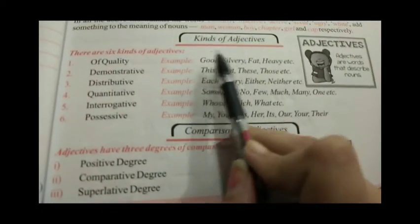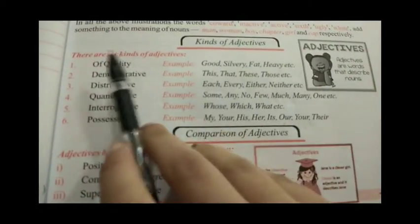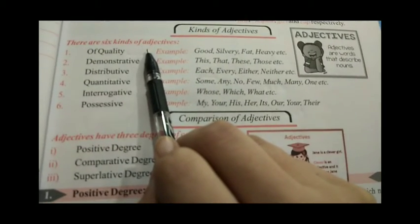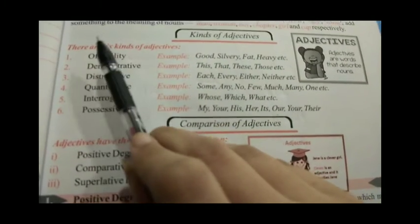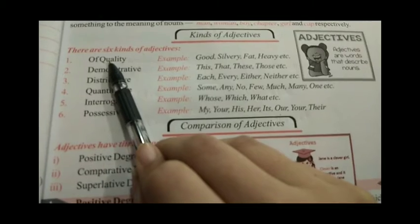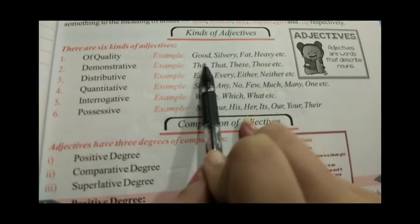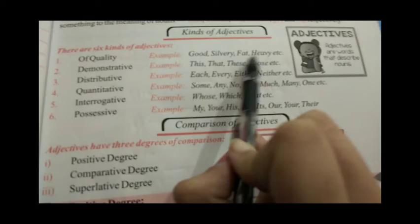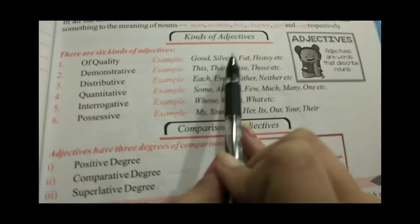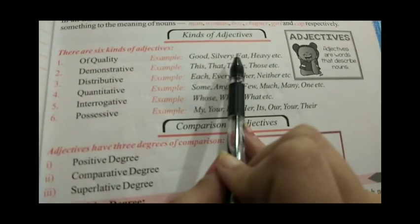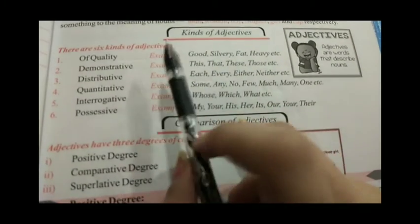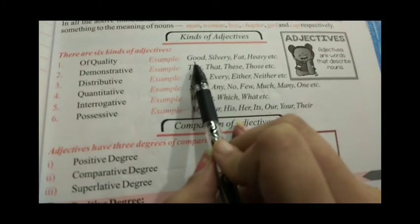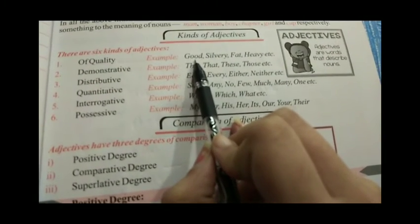Now we are going to study the kinds of adjectives. There are six kinds of adjectives. The first is adjective of quality, whose examples are: good, silvery, fat, heavy — meaning अच्छा, बुरा, fat, भारी. Such adjectives which describe a quality are called adjective of quality.